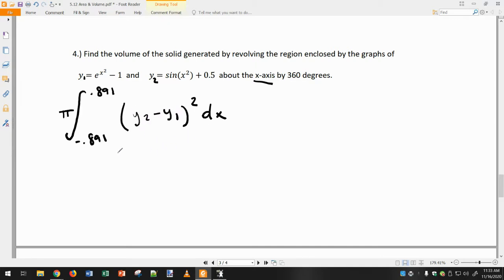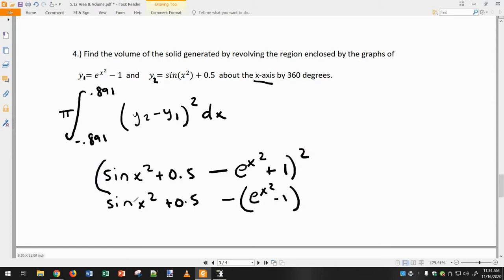So what we're going to type into the calculator is going to be pretty complicated because nothing's really going to simplify. You could type it in like this: sine x squared plus zero point five minus the whole thing like this. But we're going to have to put big parentheses around the whole thing and square when we plug it in.